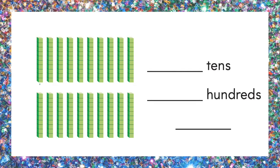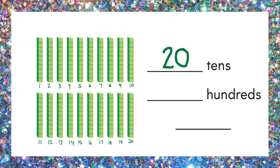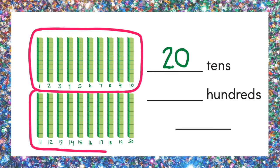Here is another one. Count the tens first: 1 through 20. There are 20 tens. Now we can circle groups of 10 to show us how many hundreds there are. There are 2 hundreds. Write the number: 200.